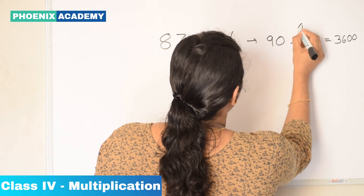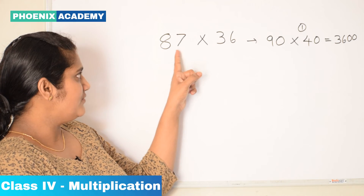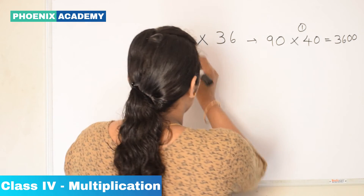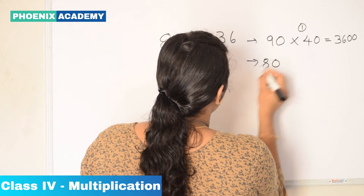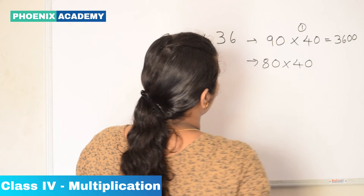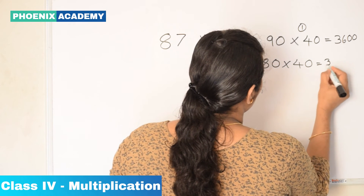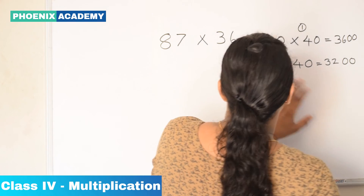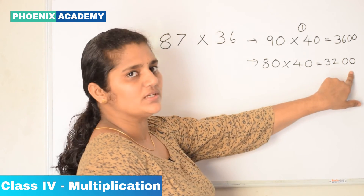This is the first way. Second way: round off 87 as 80 and 36 as 40. Then multiply 8 times 4 is 32, and put two zeros. So in the second method we got the product as 3,200.